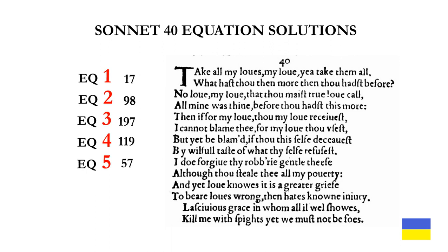Here are the solutions. Equation 1 is 17 — all that counting and subtracting just to get to 17. Equation 2 is 98. Equation 3 is 197. Equation 4 is 119, which is a multiple of 17. Equation 5 is 57, which is, of course, 17 plus the number of the sonnet.